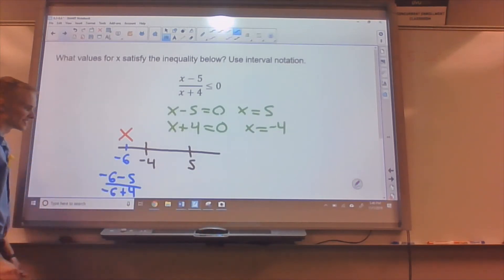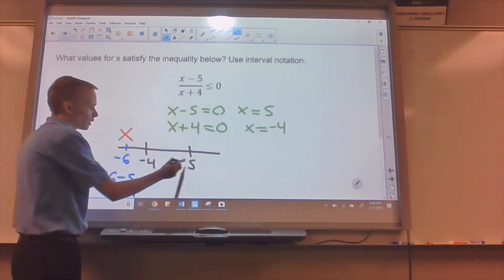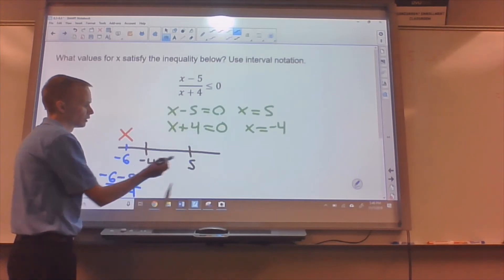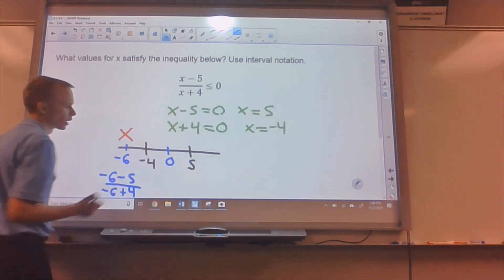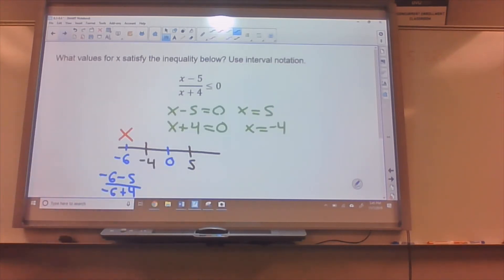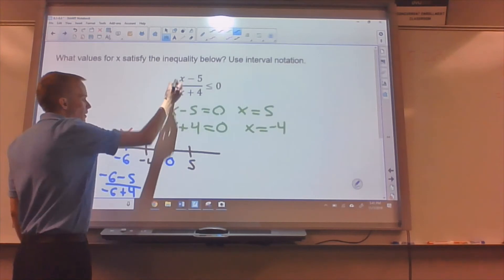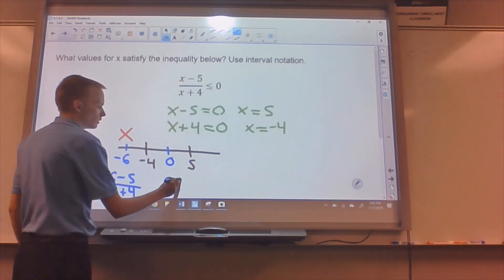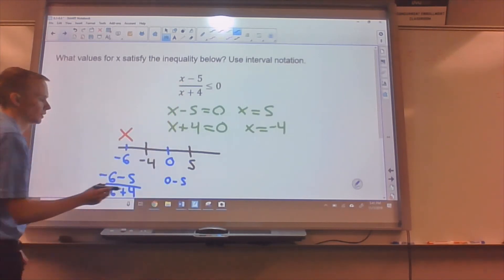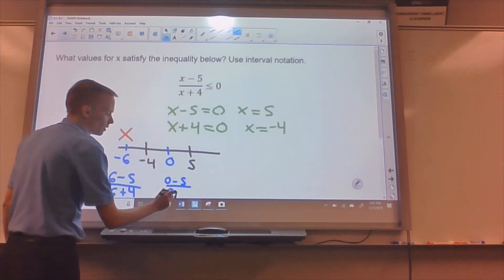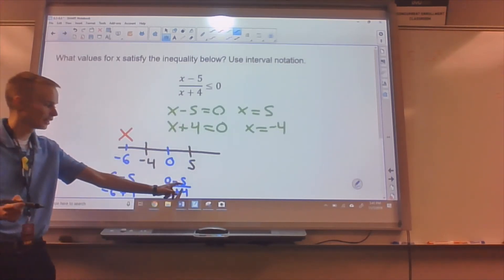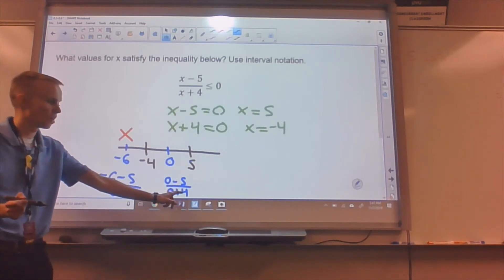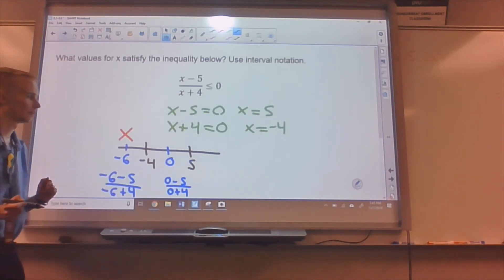We do the same thing for the chunk between negative four and positive five. So I plug in, I don't know, zero is between those two. I would do zero minus five over zero plus four. So in other words, negative five over positive four. That will be negative.